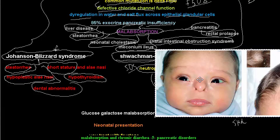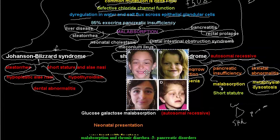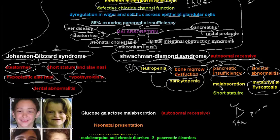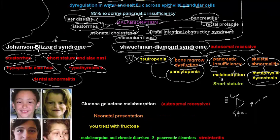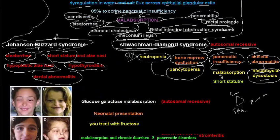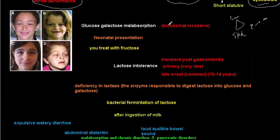A child with Johanssen-Blizzard syndrome will likely have short stature, hypothyroidism, dental abnormalities, and absent nasal alae. To recap: Shwachman-Diamond syndrome is an autosomal recessive condition with the triad of bone marrow dysfunction, pancreatic insufficiency causing malabsorption, and skeletal abnormalities. For Johanssen-Blizzard syndrome, remember the characteristic photo with nasal, dental, and growth features.